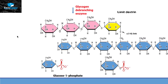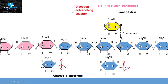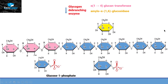Glycogen debranching enzyme has two different functions. The first function is that it acts as an alpha-1,4-glucan transferase — it takes the three glucose molecules represented by pink color and shifts them to another branch. Now only one glucose molecule, represented by yellow color, remains with the alpha-1,6 glycosidic bond. The second function is that it acts as amylo alpha-1,6-glucosidase, which breaks this alpha-1,6 glycosidic bond and releases that glucose molecule.